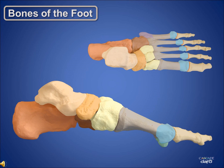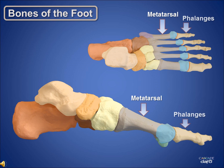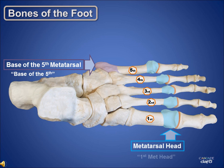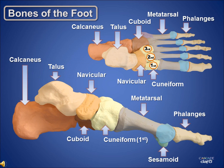Let's review these terms one more time: the metatarsals, the phalanges, and the sesamoids. The base of the fifth metatarsal, or base of the fifth. The metatarsal heads, or metheads. And the metatarsal phalangeal joints, or MP joints. We hope this review has been helpful. Thanks for your participation.